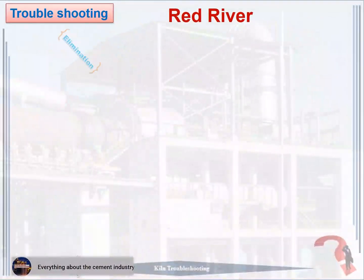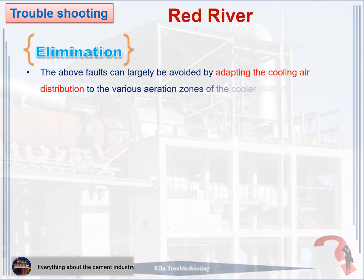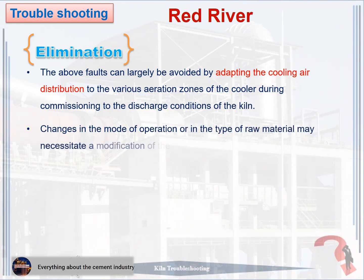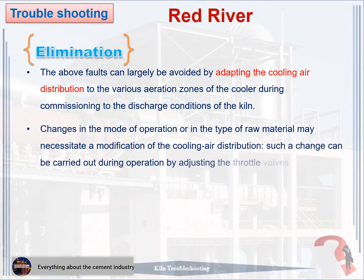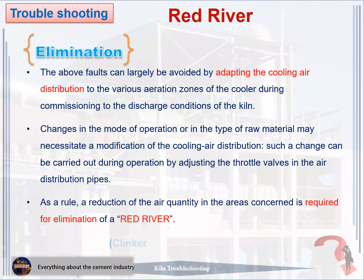How to eliminate the red river: one, the above faults can largely be avoided by adapting the cooling air distribution to the various aeration zones of the cooler during commissioning to the discharge conditions of the kiln. Two, changes in the mode of operation or in the type of raw material may necessitate a modification of the cooling air distribution — such a change can be carried out during operation by adjusting the throttle valves in the air distribution pipes. Three, as a rule, a reduction of the air quantity in the areas concerned is required for elimination of a red river. Attention: the clinker bed must be observed.